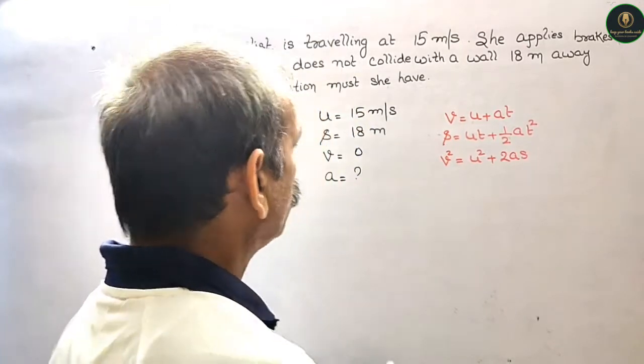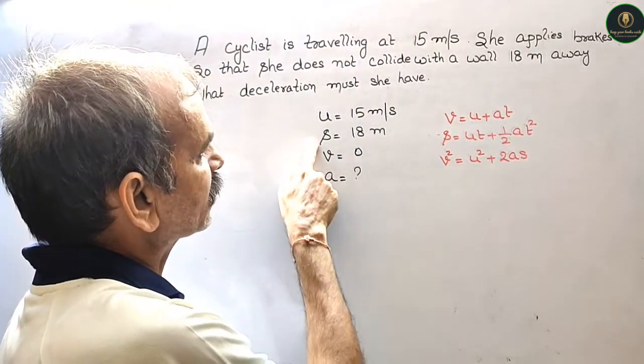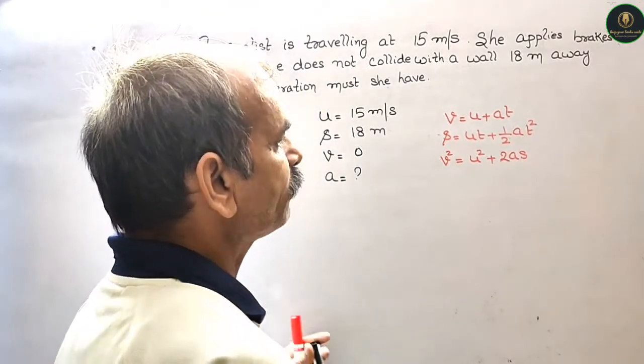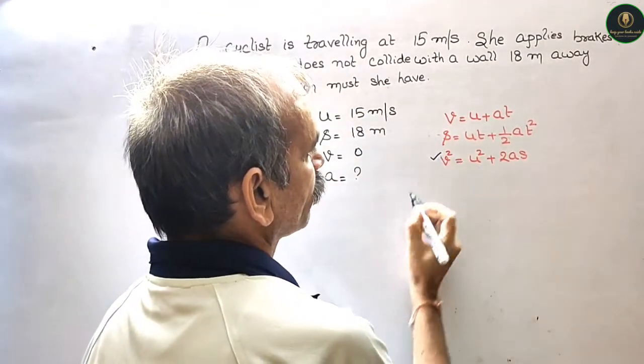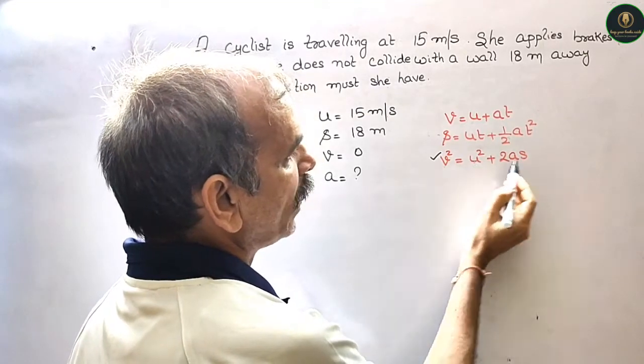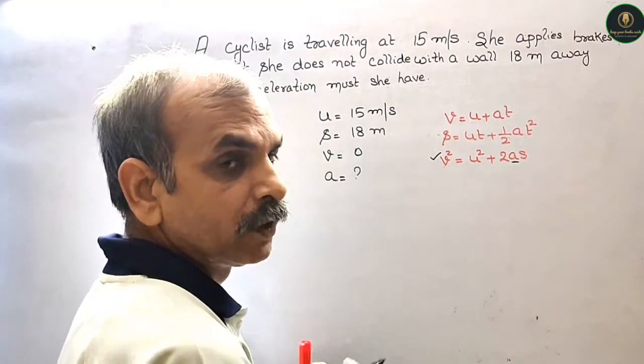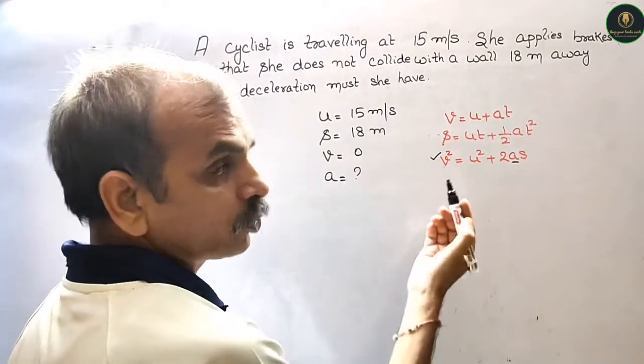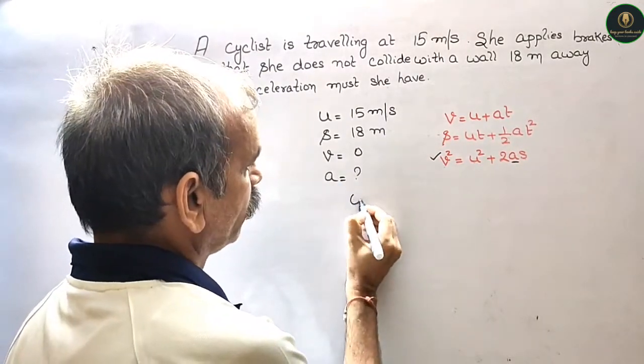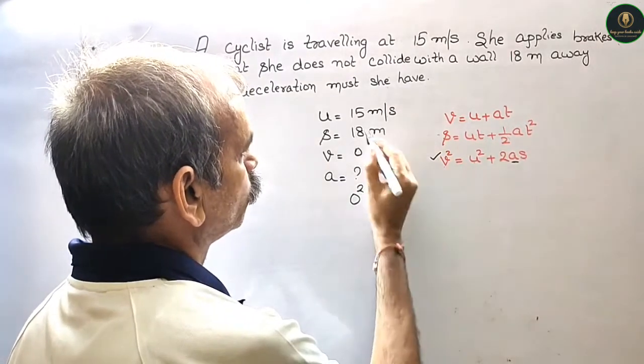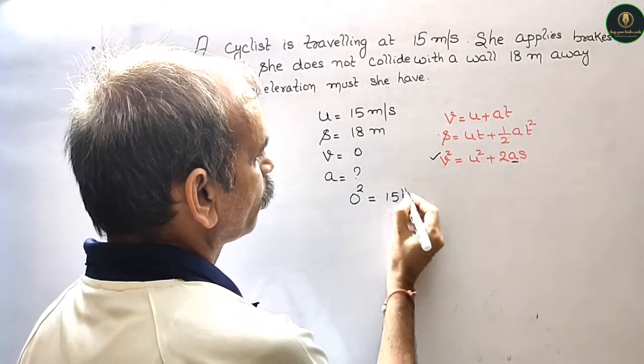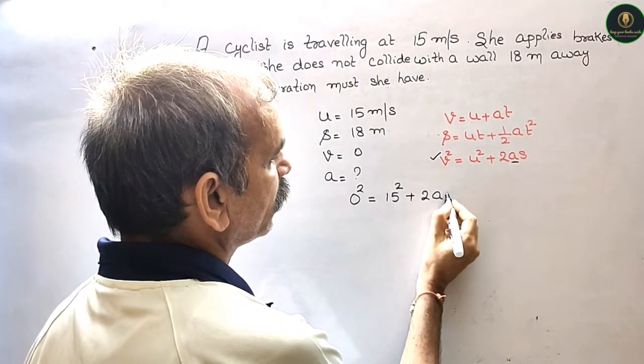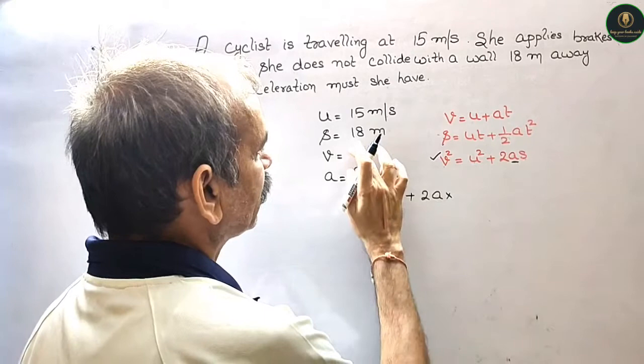Now you can find out A by third equation. We can find out A. V square is zero, so zero square is equal to U, U is 15 square, plus 2A into S, S is 18.